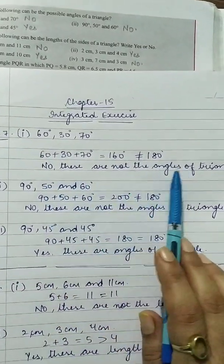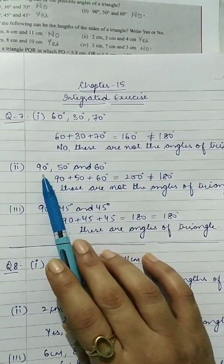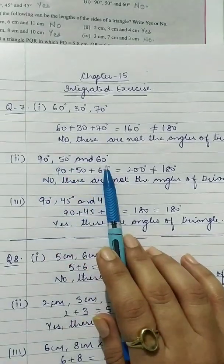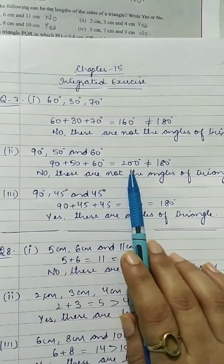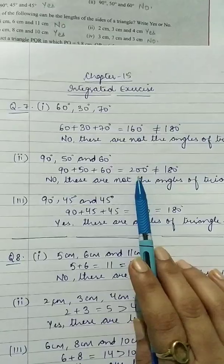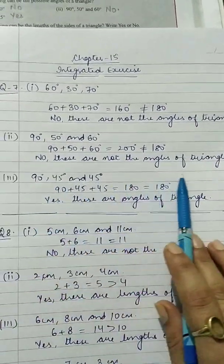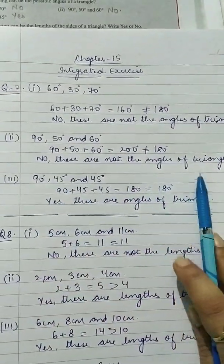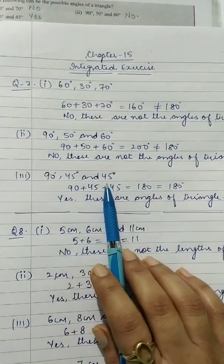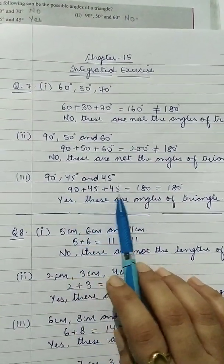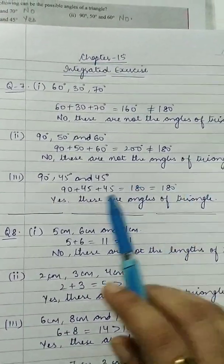Second part: 90, 50, and 60 — their sum is 200, which is not equal to 180, so no, these are not the angles of a triangle. Third part: 90, 45, and 45 — their sum is 180, which equals 180, so yes, these are the angles of a triangle.